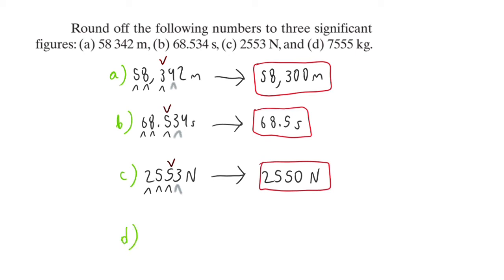And D. 7,555. So the first three numbers are 7, 5, and 5. But for a 5, there's a special case.